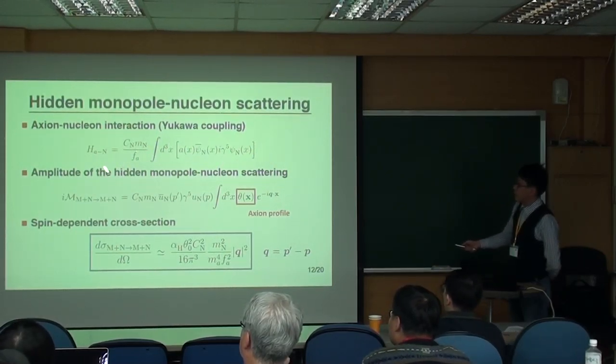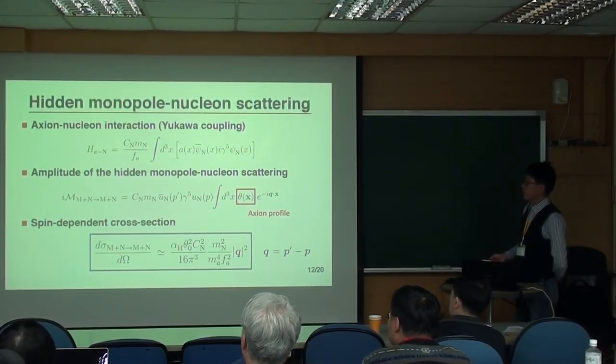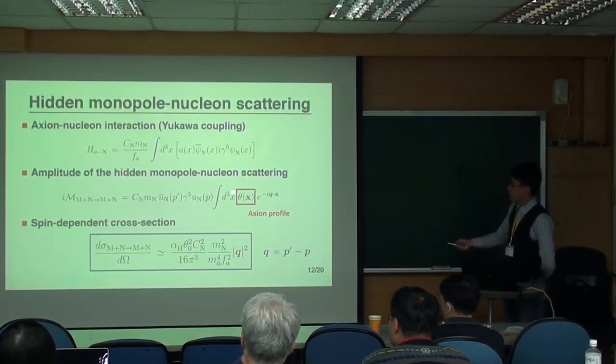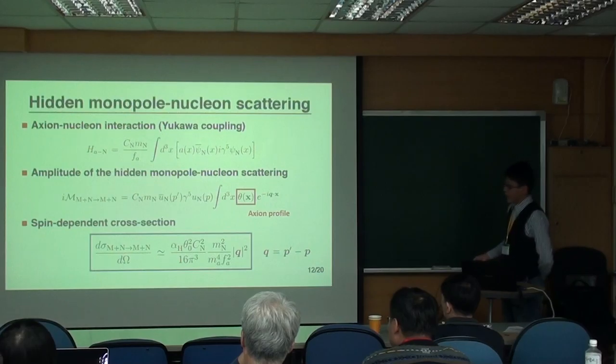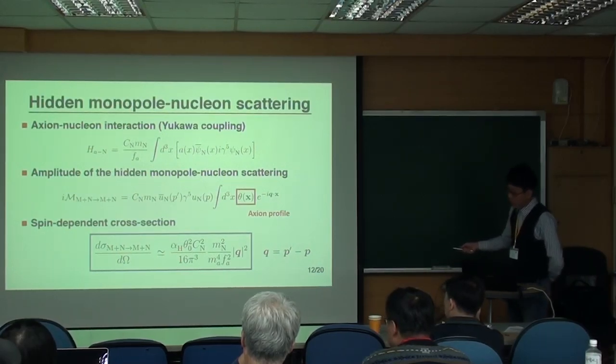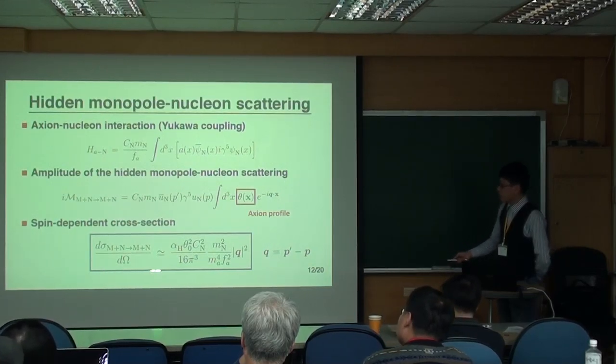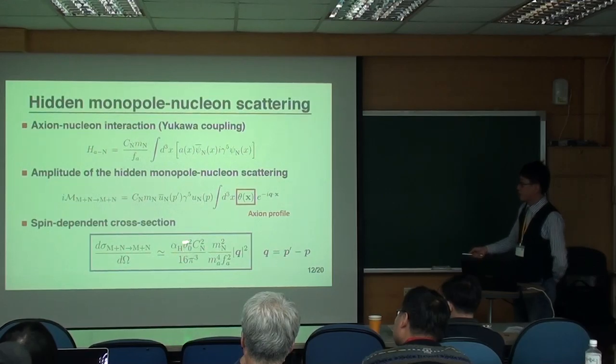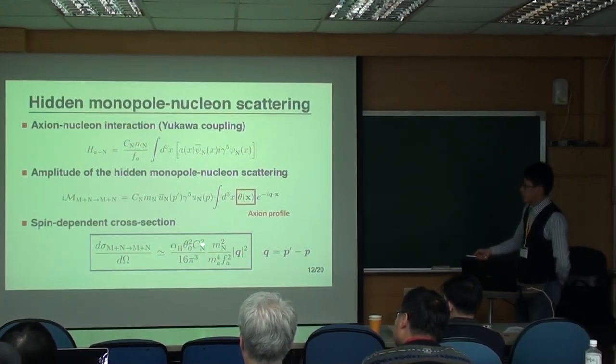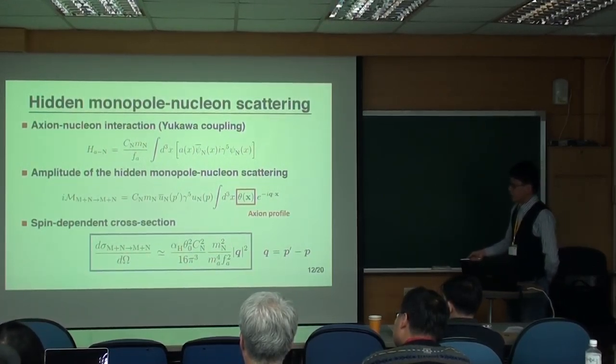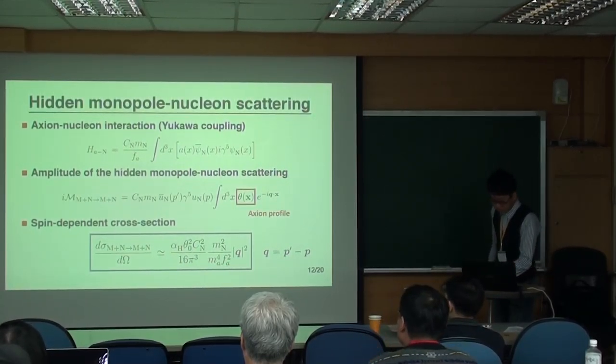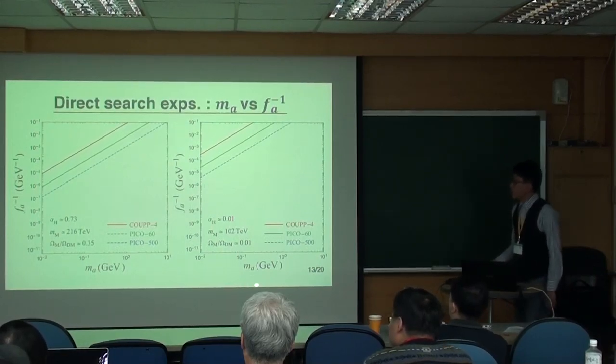So then we just write down the interaction between the axion and the nucleon. From this Hamiltonian, we can write down the scattering amplitude of the monopole. As you can see here, you have to integrate the axion profile as I showed in the previous slides. And then you just do the calculation. So here is our result.